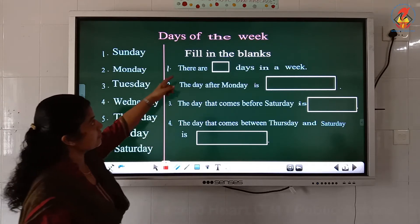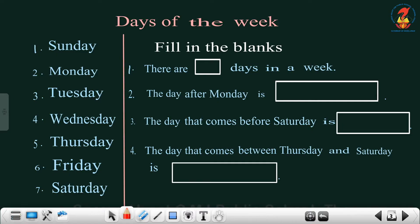Let's read the questions. Fill in the blanks. First question: there are dash days in a week. How many days are there in a week? There are seven days. So you have to write: there are seven days in a week. Second question: the day after Monday is? Which day comes after Monday? Tuesday. So the answer is Tuesday. You have to write starting with a capital letter — Tuesday.